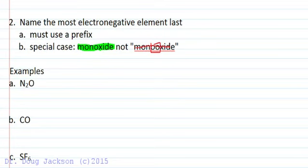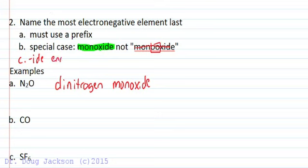Let's do a few examples, that's the best way to learn this. So two nitrogens, we have to use a prefix: di. Name it just like we would a metal, dinitrogen, and then the most electronegative element last, must use a prefix, and we have to still use the ide ending. So dinitrogen monoxide is the first.